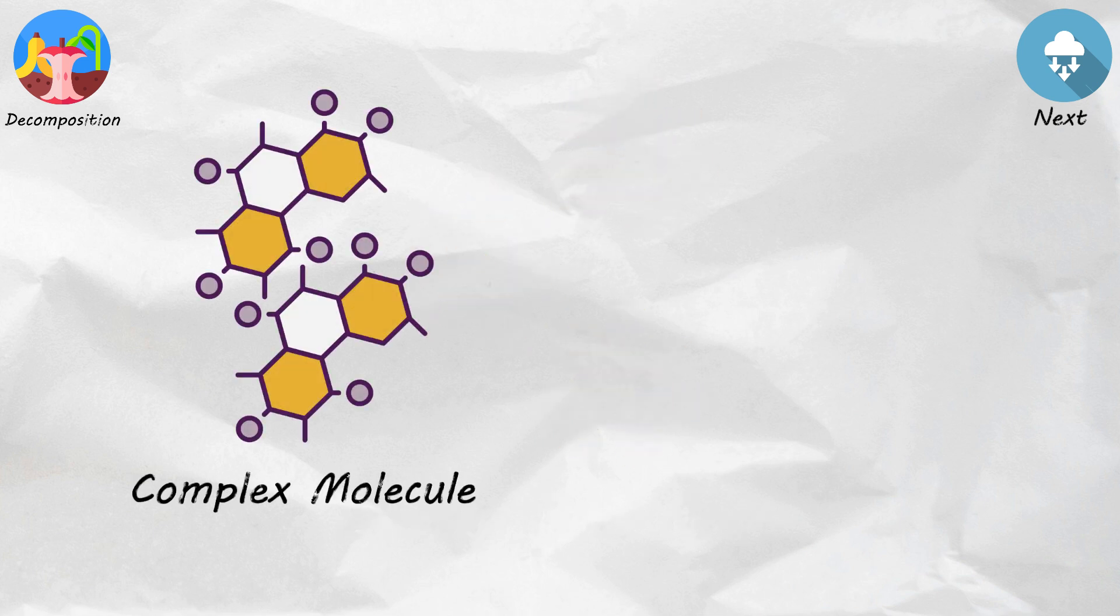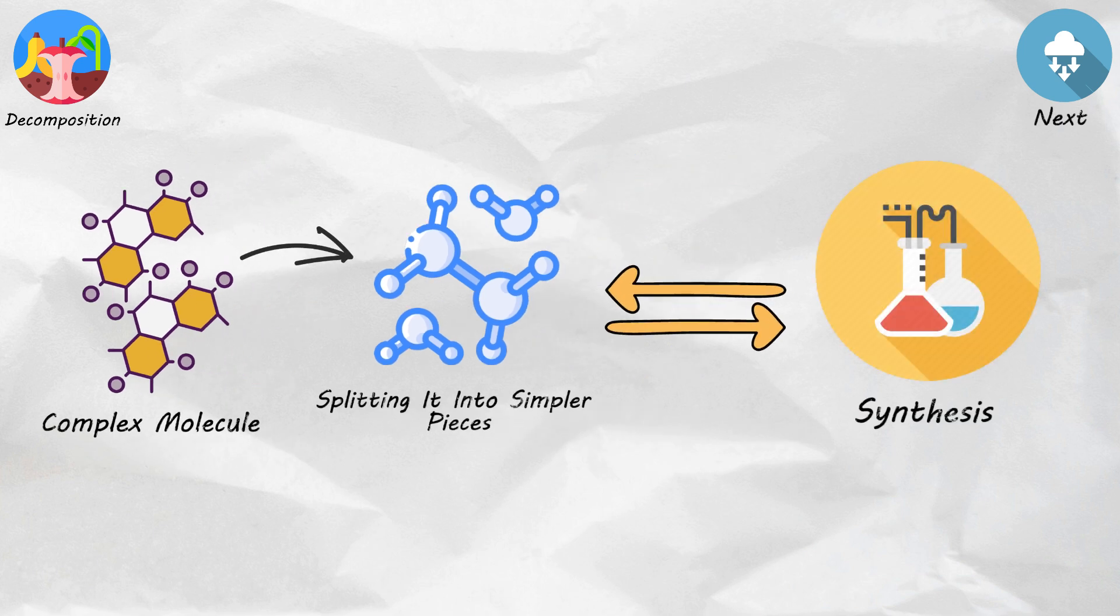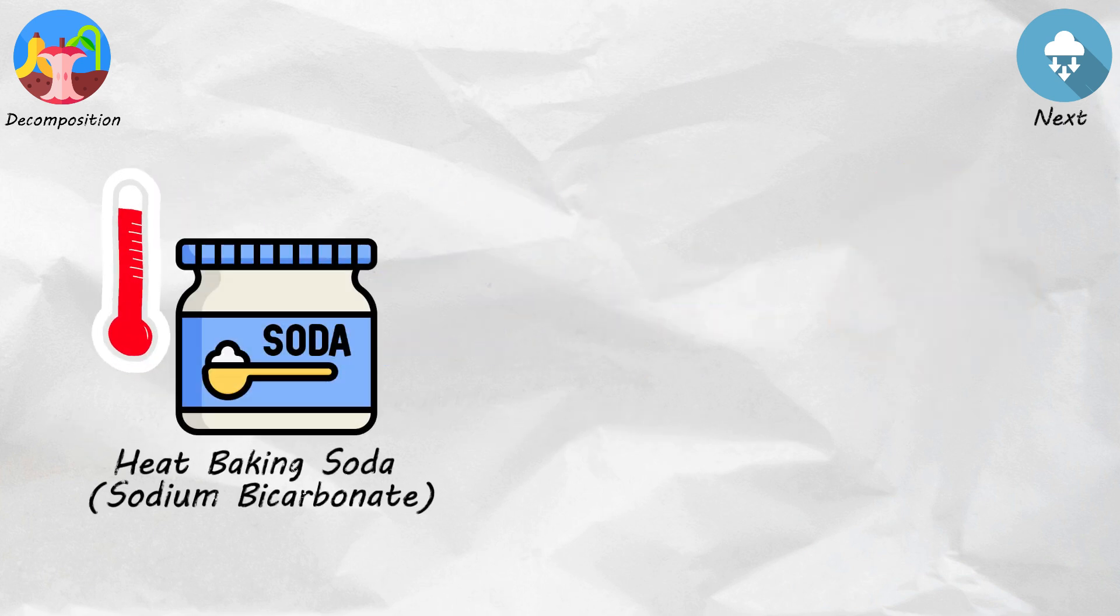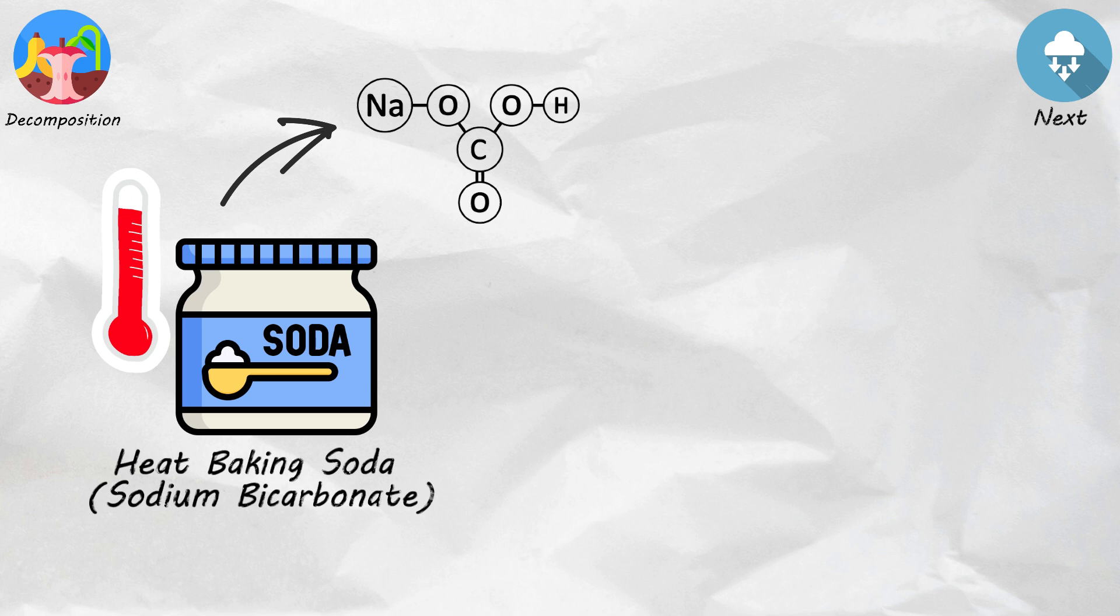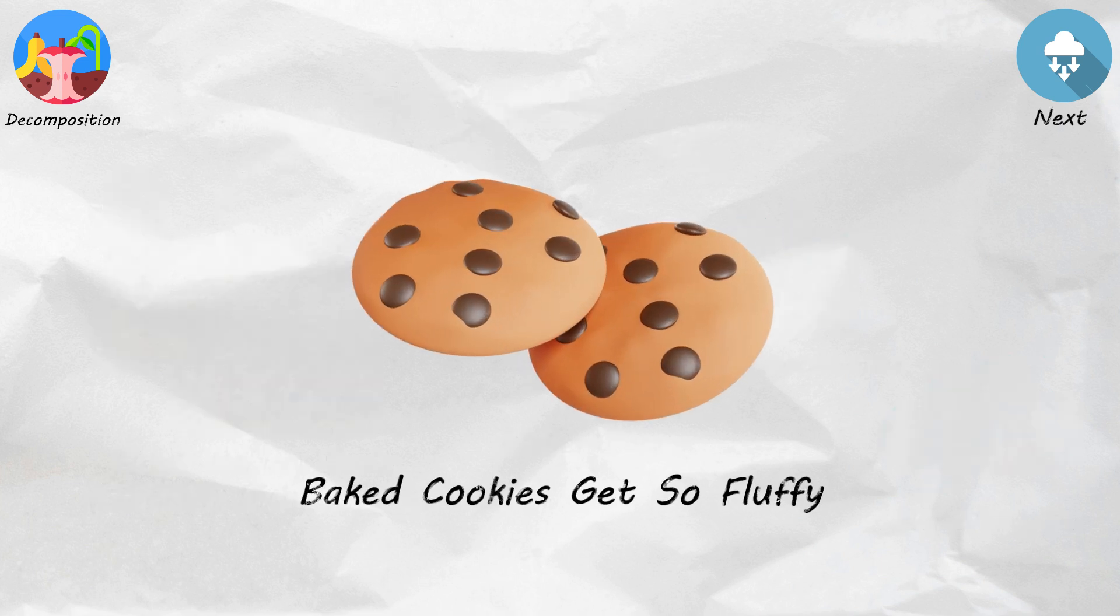In chemistry, it's like taking a complex molecule and splitting it into simpler pieces. It's the reverse of synthesis. For example, when you heat baking soda, sodium bicarbonate, it breaks down into sodium carbonate, water vapor, and carbon dioxide gas. That explains how your baked cookies get so fluffy.